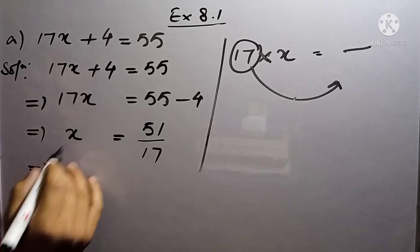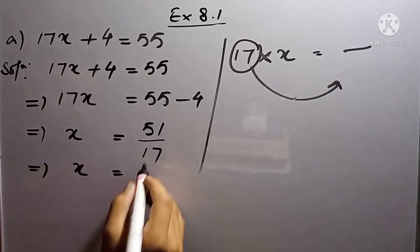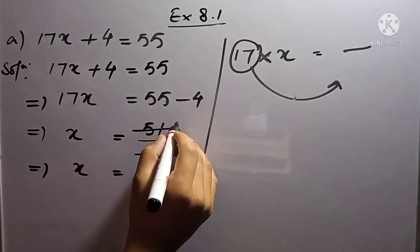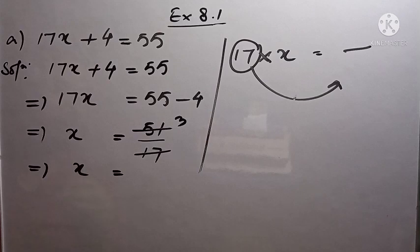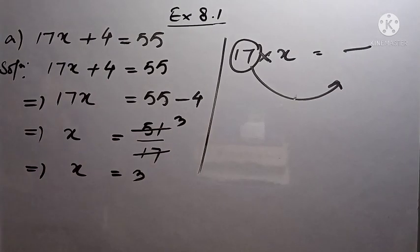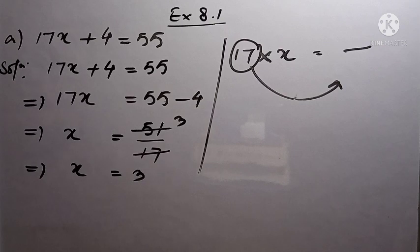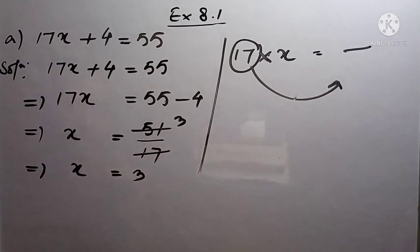So x equals 51 divided by 17. 17 times 3 is 51, so the value of x is 3. But now you're asked to verify. Verify means you have to prove that your answer is correct — that x equal to 3 satisfies the equation.